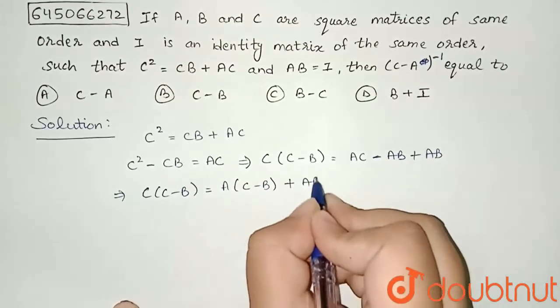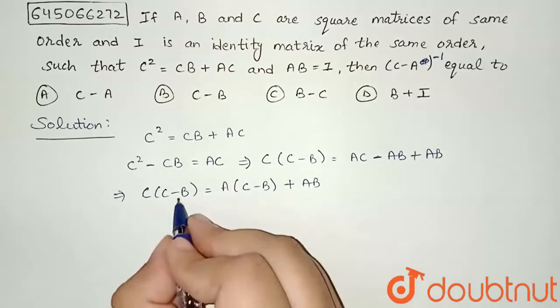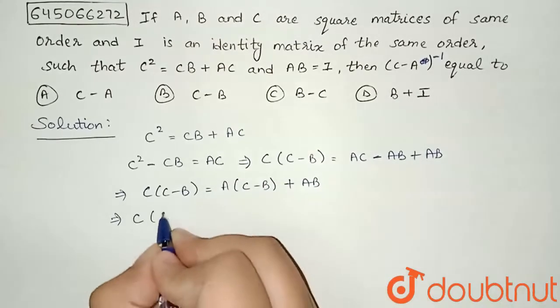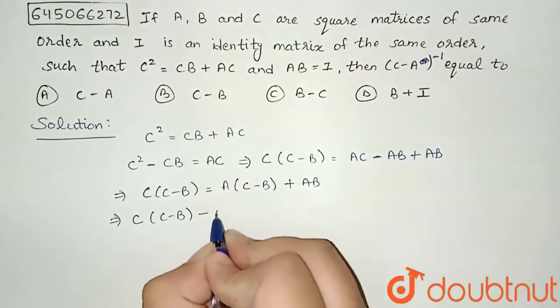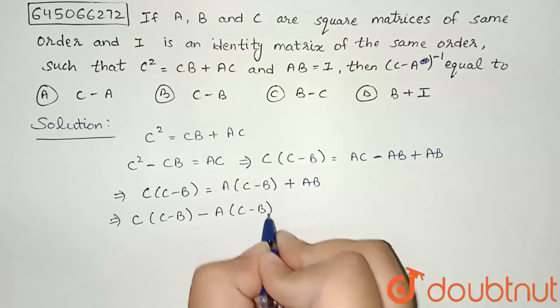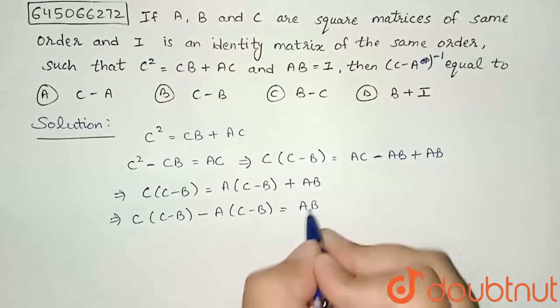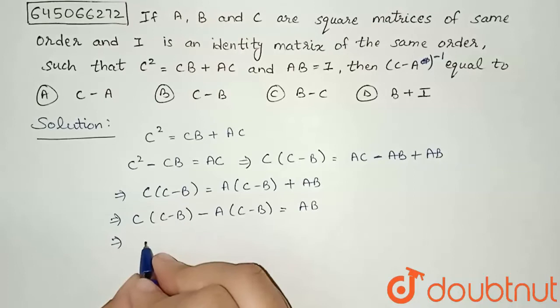Now we will take this A(C - B) to the other side, so I will get C(C - B) - A(C - B) = AB. I can see (C - B) common here.